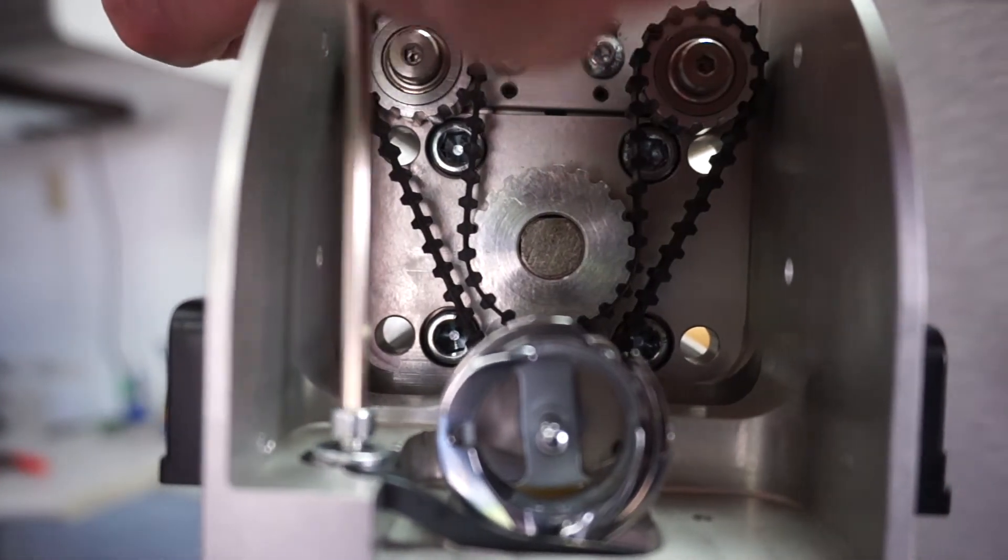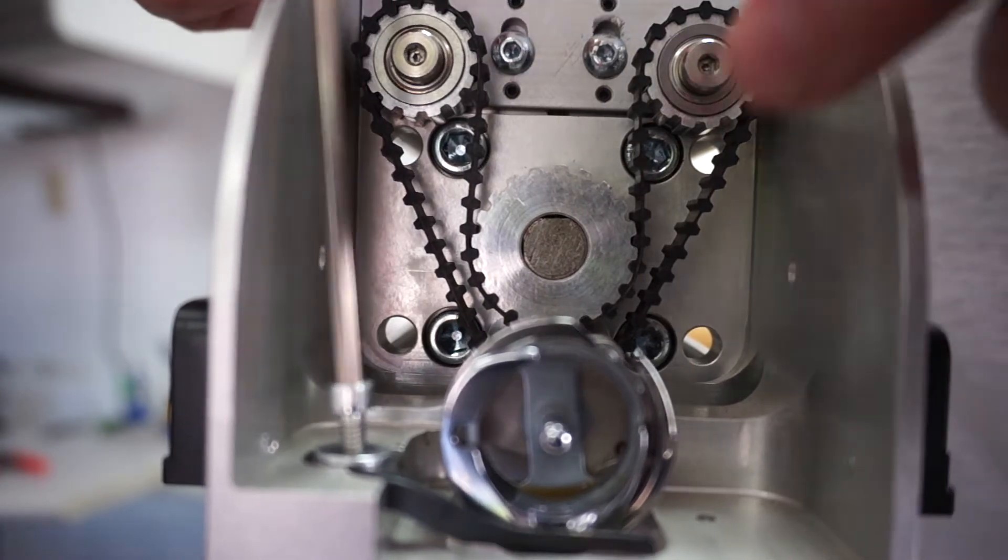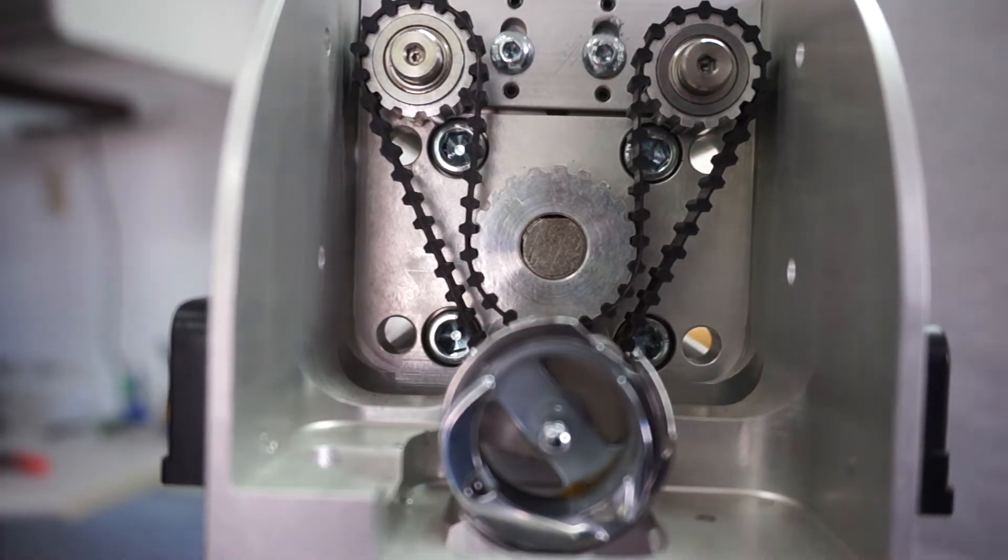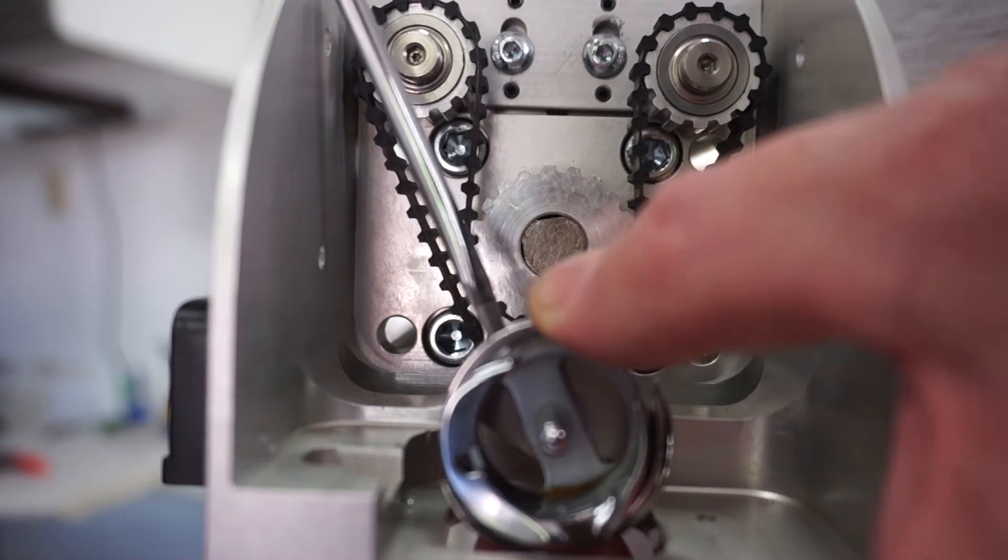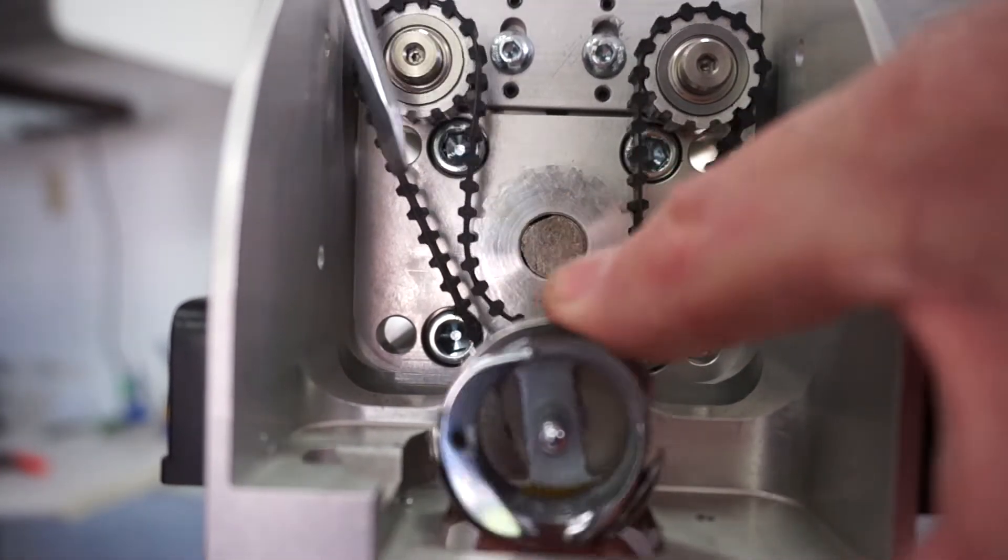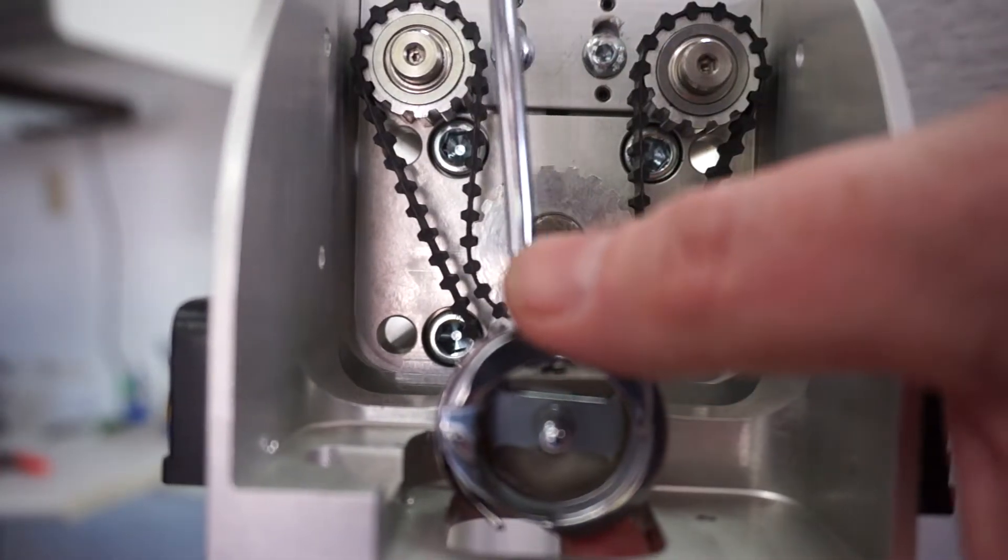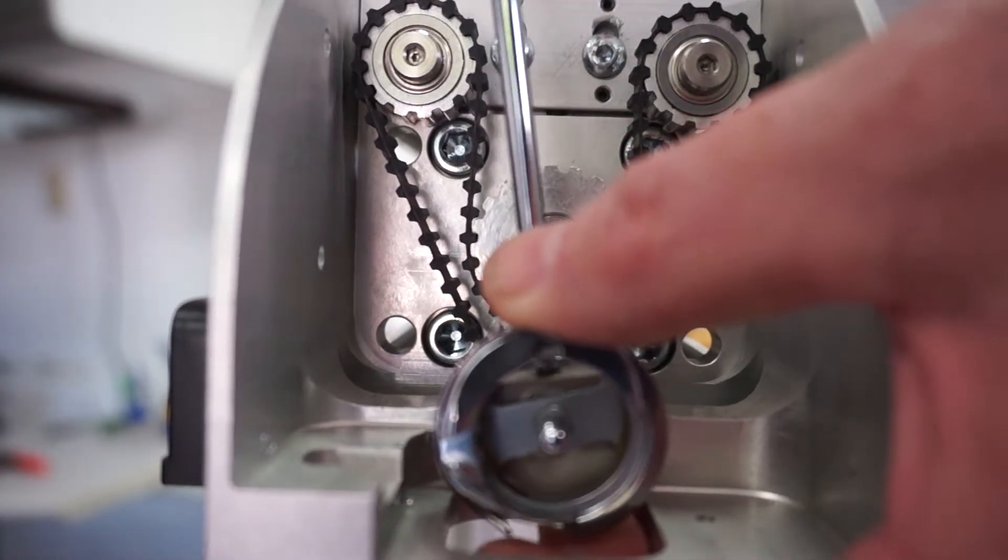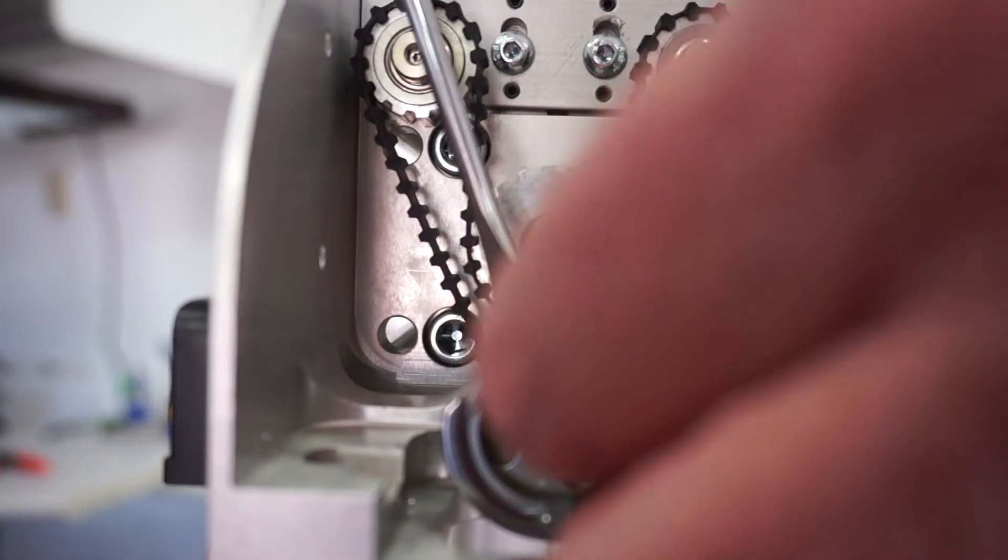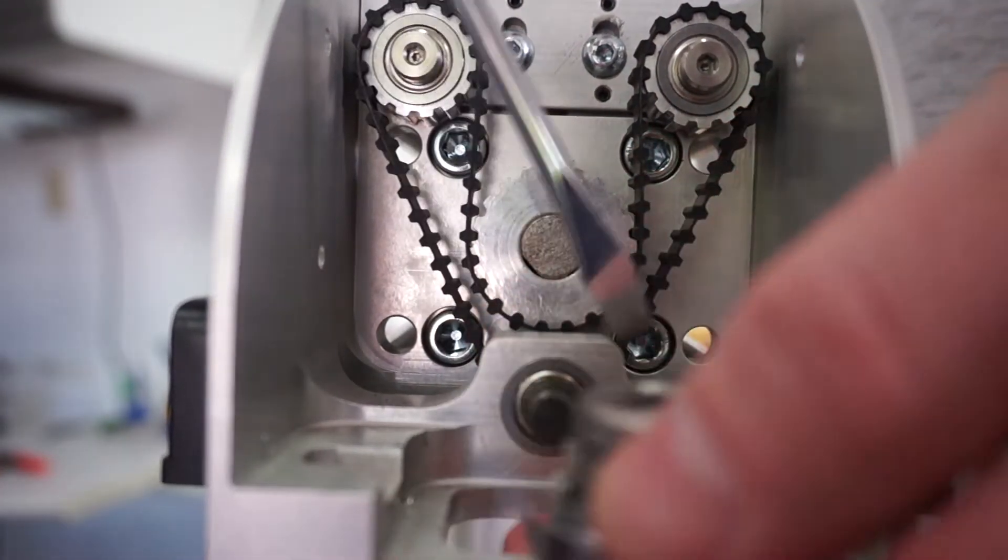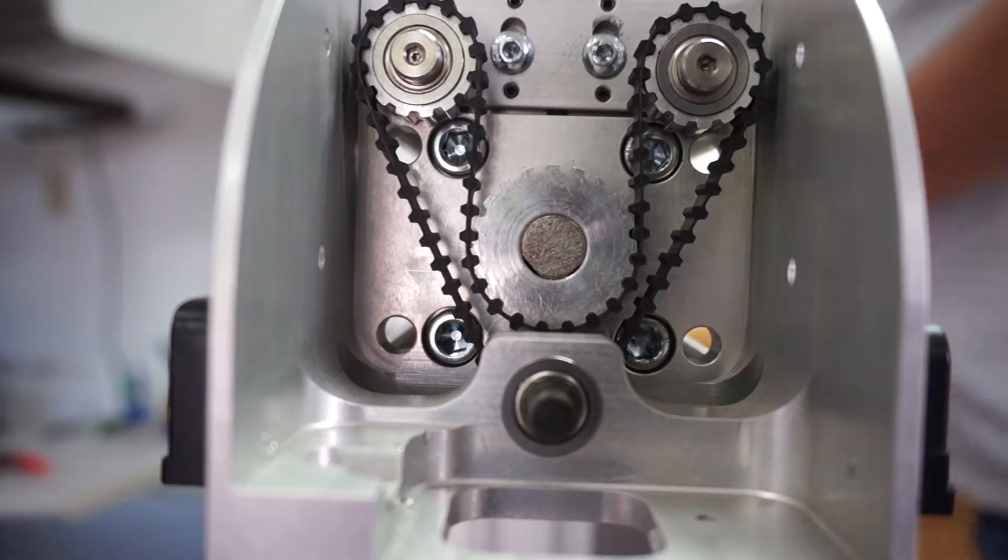The first thing I'm going to do is remove the hook position finger. We can get that out of the way. Now I'm going to remove the hook. Now we've got the hook off.